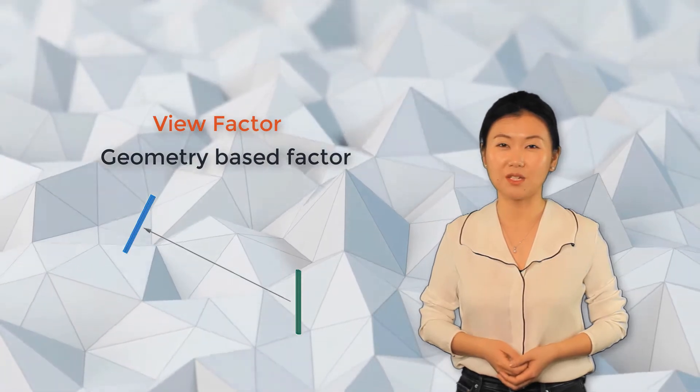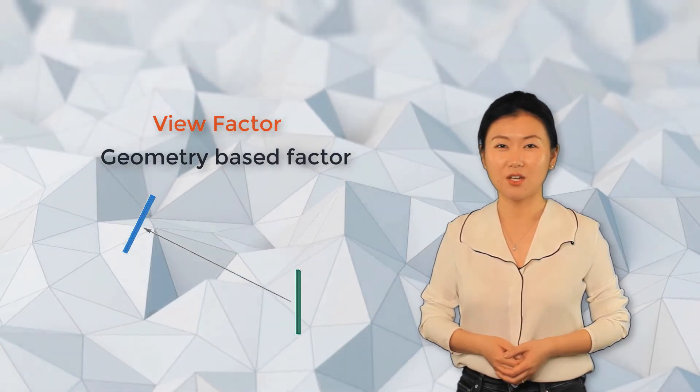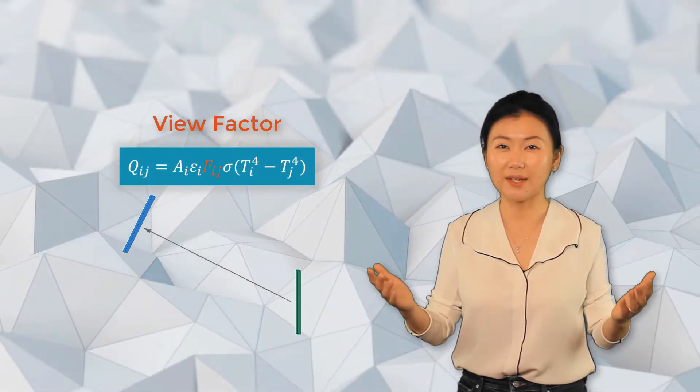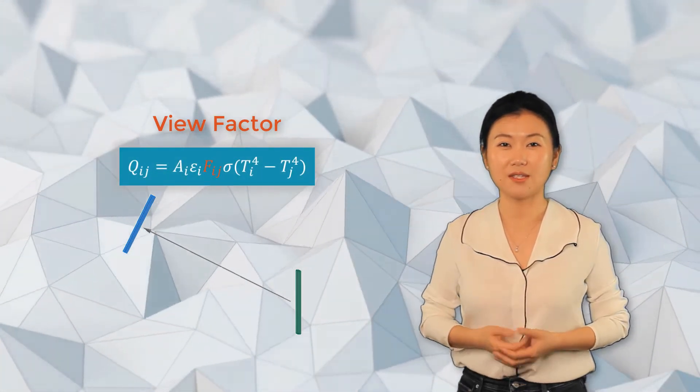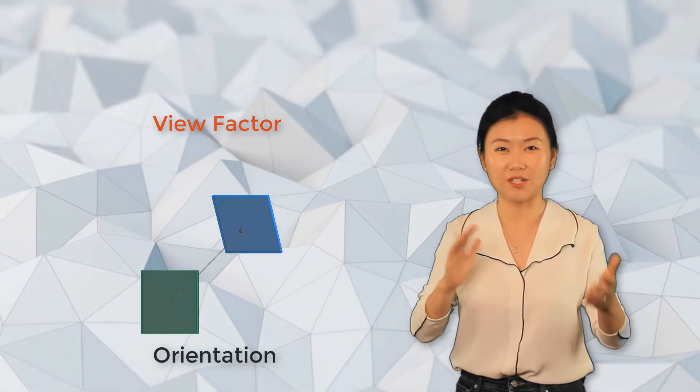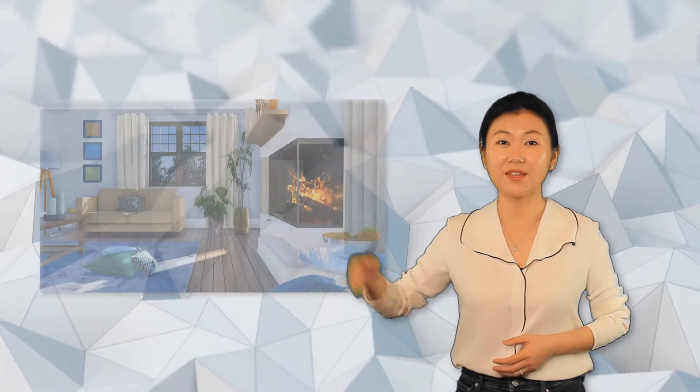So why does view factor appear in the equation for radiative heat flux, and why is it important? This is because thermal radiation depends on the orientation between the surfaces.